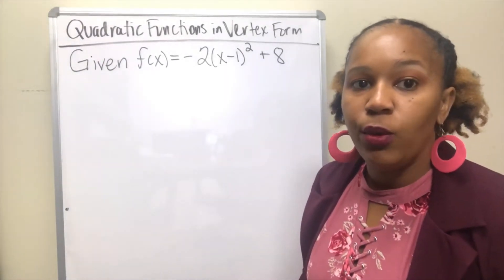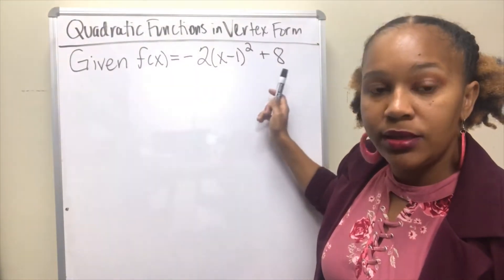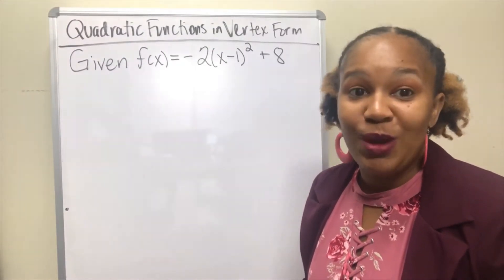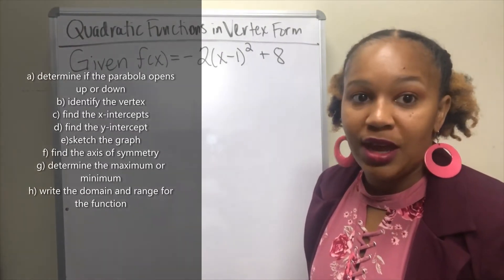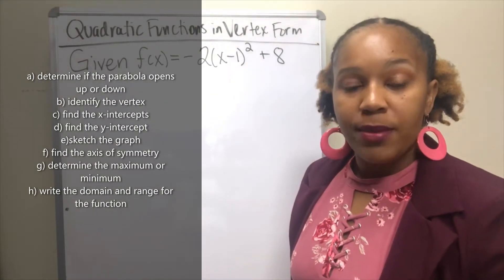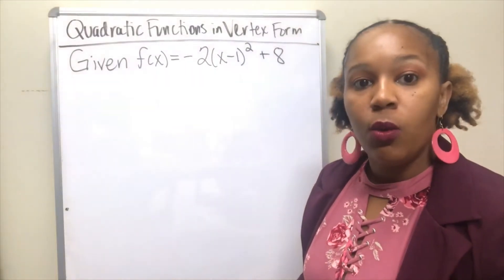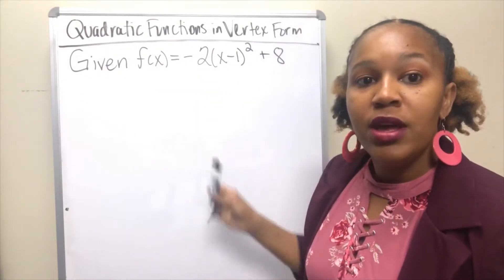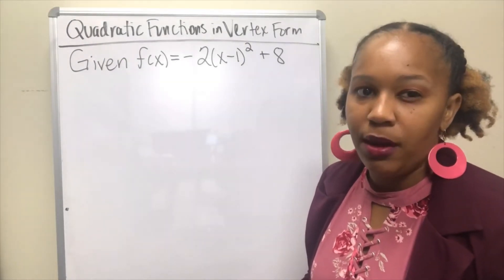Now let's work an example. We are given the function in vertex form: f of x equals negative 2 times x minus 1 squared plus 8. The square makes it quadratic. This problem is broken into eight parts. For part a, we want to determine if this parabola opens up or down. We look at the value of a — in this case a equals negative 2. Since a is negative, this parabola will open downward.